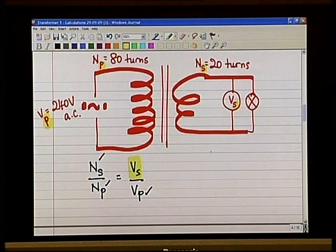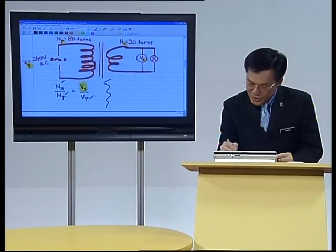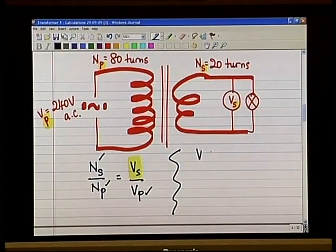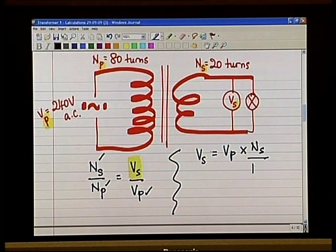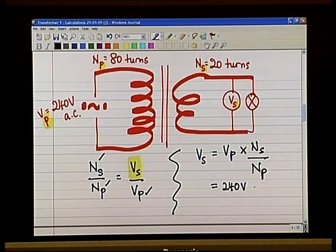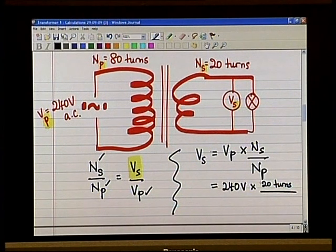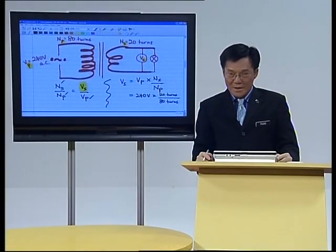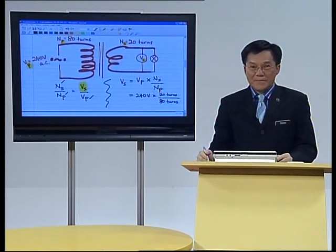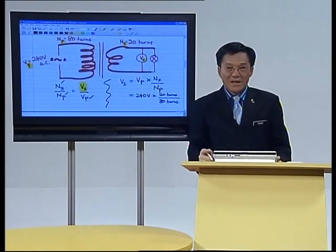Let's do it on the right-hand side here. Vs equals Vp multiplied by Ns divided by Np. Vp is 240 volts. I refer to the diagram to get my values: Ns is 20 turns, divided by Np which is 80 turns. It's clear — please write down the units every time. The units are very important, and I'll show you why.